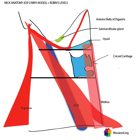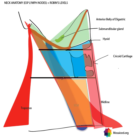So there are seven levels. Levels one and two simply lie above the hyoid line — above the projection of that inferior border of the hyoid. Level three lies between those two lines. Level four lies beneath the lower border down to the clavicle, and level five is everything else in the posterior triangle of the neck.